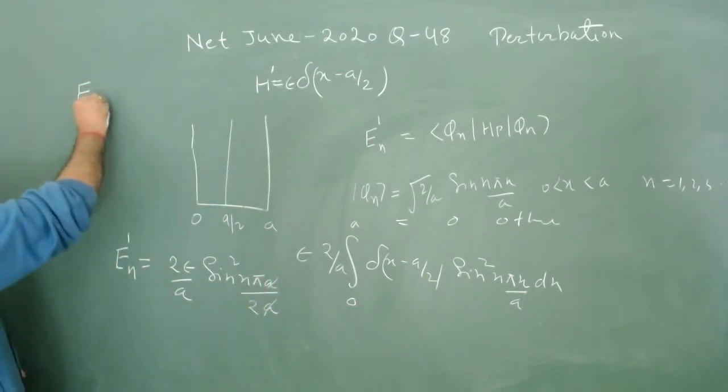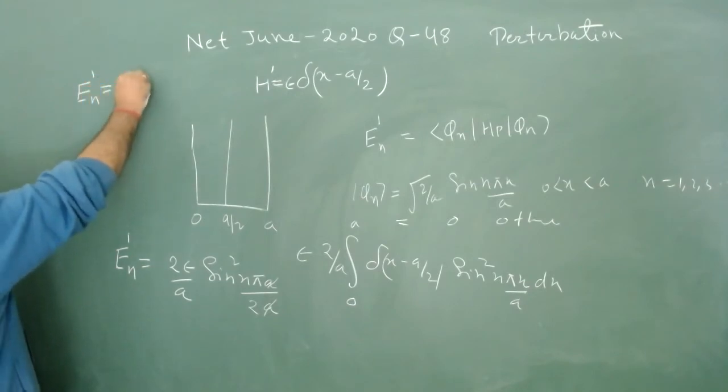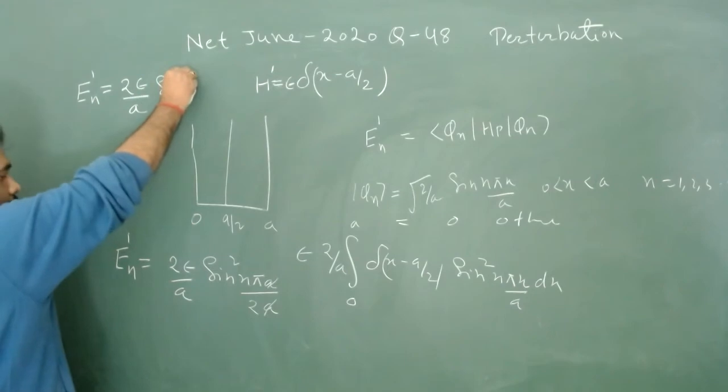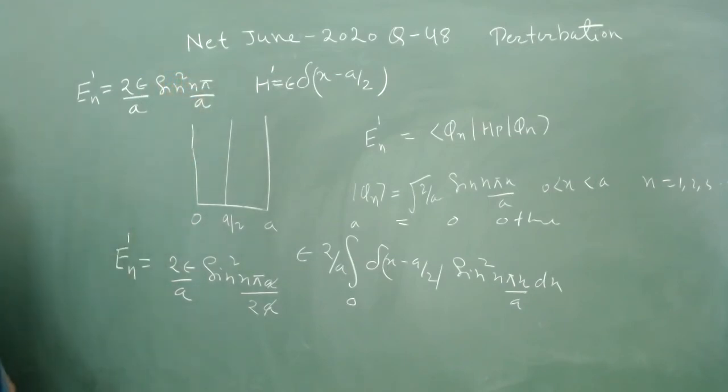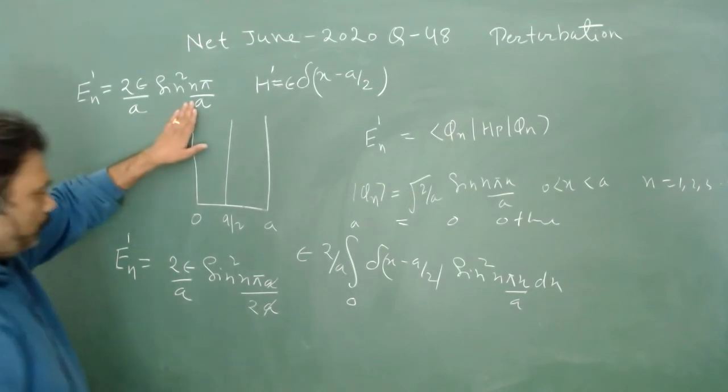We have basically En1 as 2*epsilon/a times sin^2(n*pi/2), because a is canceled.